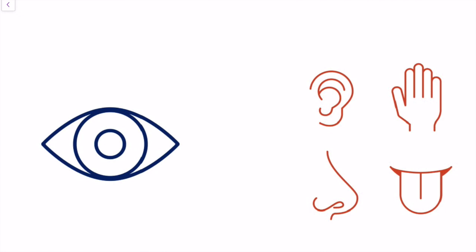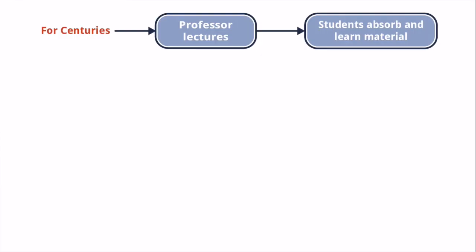We start with the brain and how the brain and the senses interact. What we find is that sight — vision — trumps the other senses when we talk about learning as well as developing short and long-term memory. So for centuries, professors have lectured; they have used their voice and their presence to help students learn and absorb the materials, so very professor-centered.